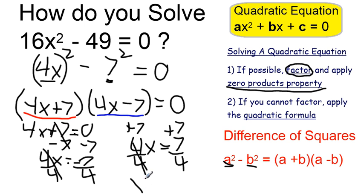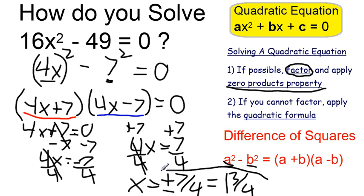In summary, my two possible solutions are x = ±7/4. Or I could also rewrite that as ±1 3/4. Those are my two solutions to the equation.